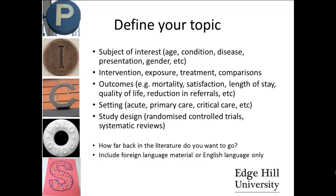Is there a particular study design that would best answer your research question that you could limit your search to? For example, questions that ask about the effectiveness of interventions are best answered in the primary literature with RCTs — randomised controlled trials — and in the secondary literature by systematic reviews or meta-analysis.